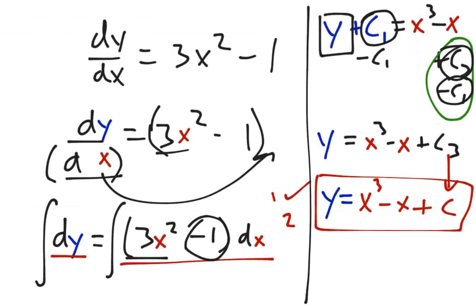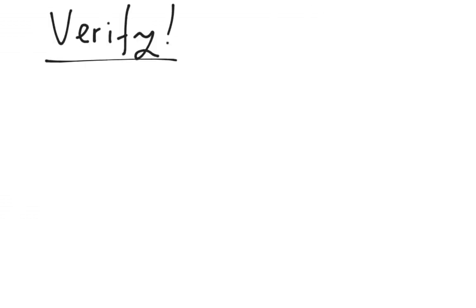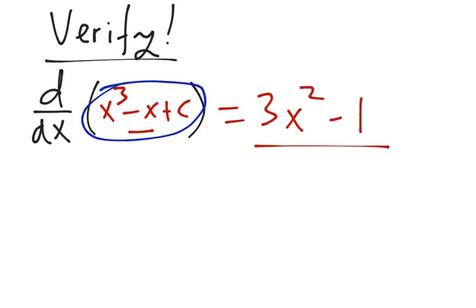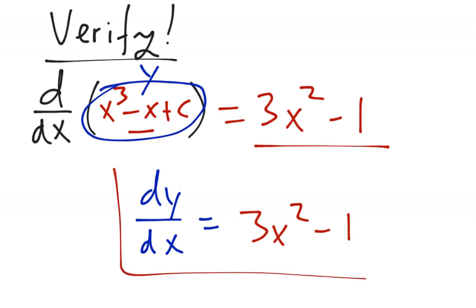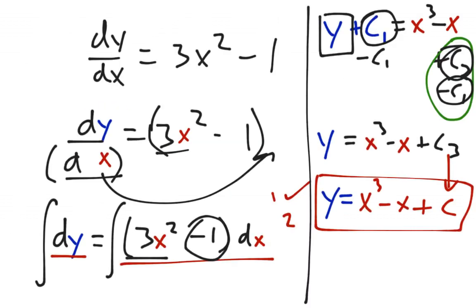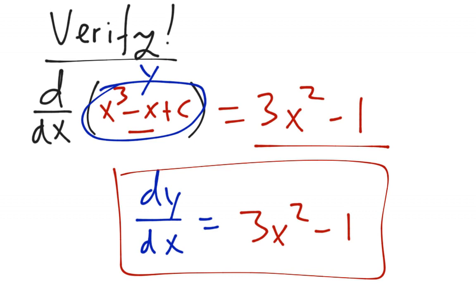Let's verify that, because that is a skill we need to know. To verify the differential equation, all I have to do is take the derivative of the answer I just got. The derivative of y, which was x cubed minus x plus c: I bring the 3 down in front to get 3x squared, negative x goes to minus 1, and the plus c goes away. So dy/dx equals 3x squared minus 1, which was the equation I started with. That's how you verify a differential equation — you stick it back in the original equation and see that you get the same answer.